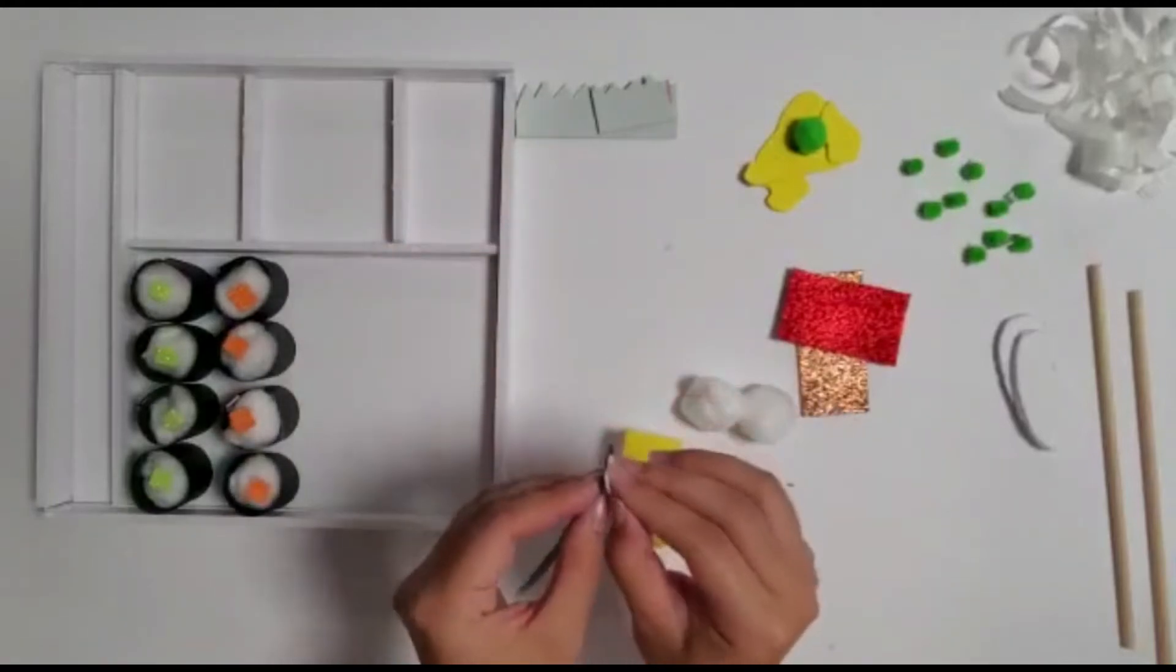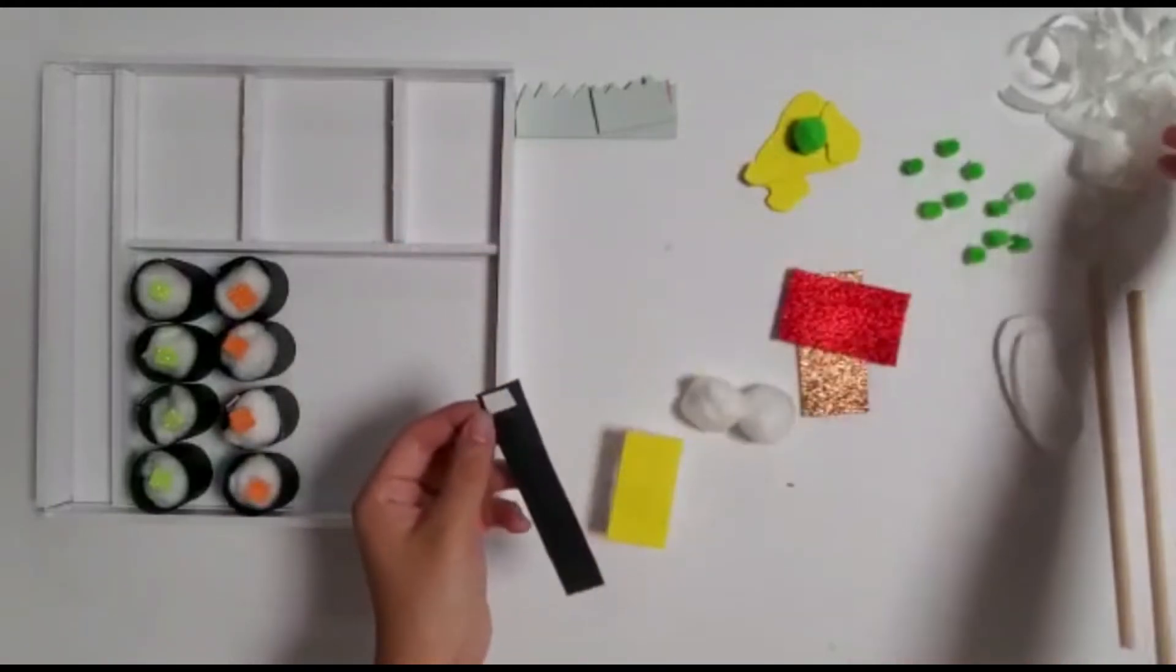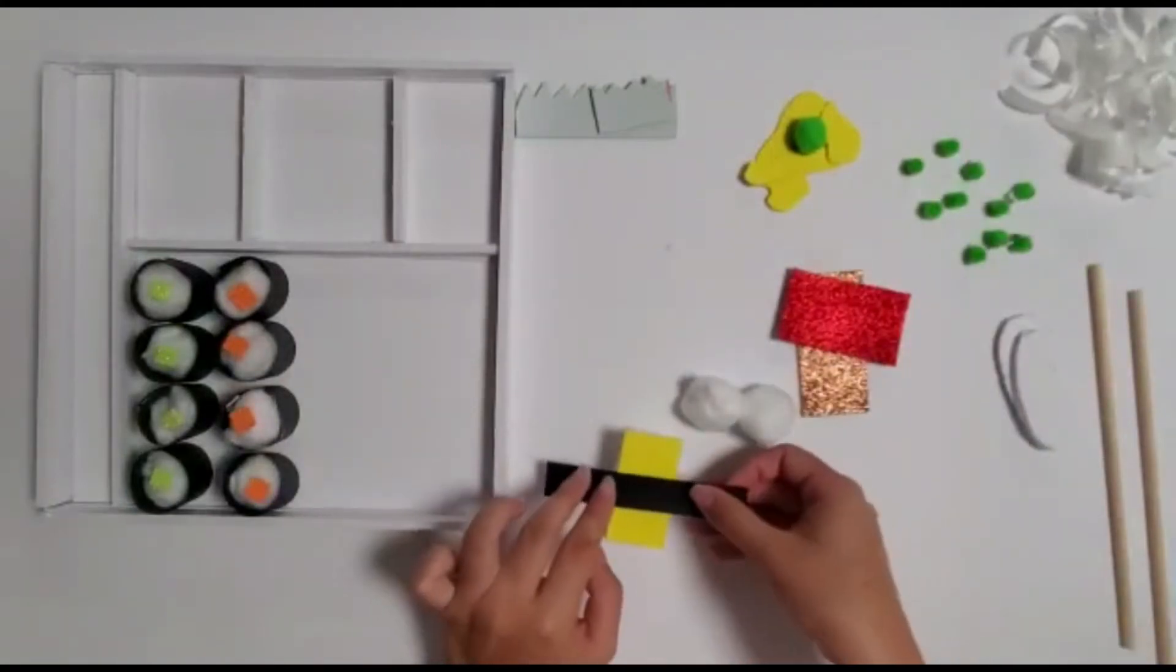Then take the narrower piece of black construction paper, peel off the tape, and wrap it around the piece of sushi.